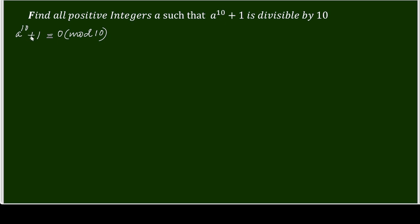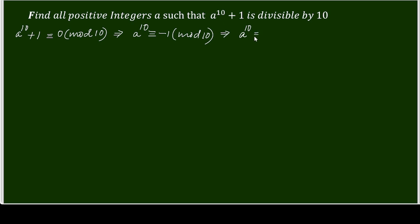When a to the power 10 plus 1 is congruent to 0 modulo 10, this is the same as a to the power 10 being congruent to negative 1 modulo 10, or equivalently, a to the power 10 is congruent to 9 modulo 10.